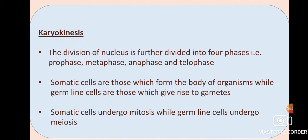Somatic cells are those which form the body of organisms — mitosis occurs only in somatic cells of multicellular organisms. Germline cells are those which give rise to gametes — the cells that carry out fertilization to form a new generation. Gametes are produced through meiosis. So somatic cells undergo mitosis, while germline cells undergo meiosis.